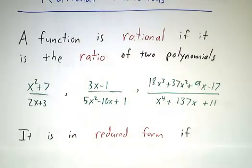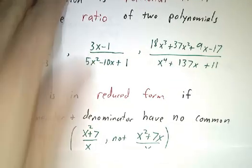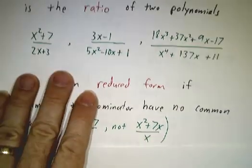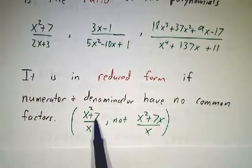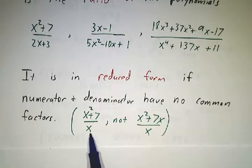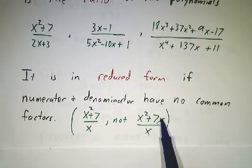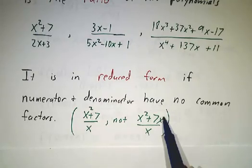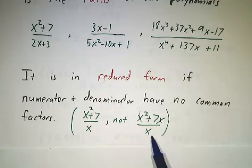And we say that it's in reduced form if the numerator and the denominator don't have any common factors. So x² + 7 over x is in reduced form, but x² + 7x over x is not in reduced form because the numerator has x as a factor and the denominator has x as a factor.